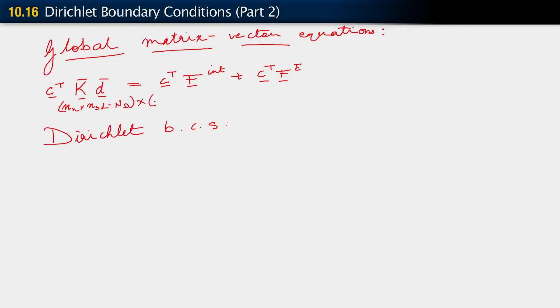This times the number of nodes in the problem times NSD. So k bar, these are the dimensions of our k bar matrix. Clearly k bar is a rectangular matrix.